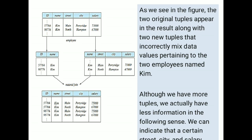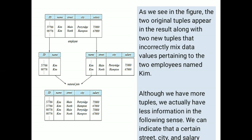When we join the two decomposed tables, we get wrong information. For example, employee Kim with id 57766 appears to be staying at street Main in Parish, but after the natural join, a second row shows the same employee Kim with id 57766 staying at North in Hampton City — which is incorrect. Although we have more tuples, we have less accurate information; the information is lost. This is the drawback of lossy decomposition. In the next lecture, we will see what conditions ensure that our database remains in a lossless state.